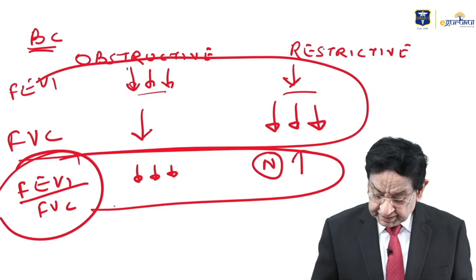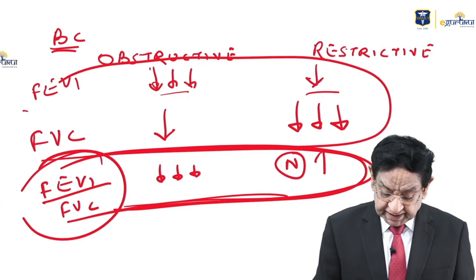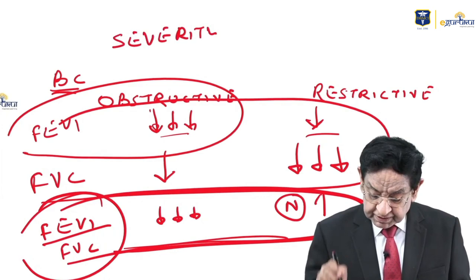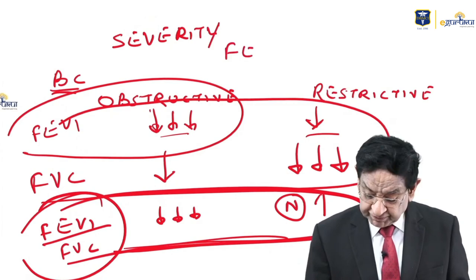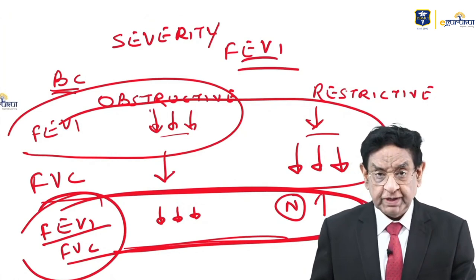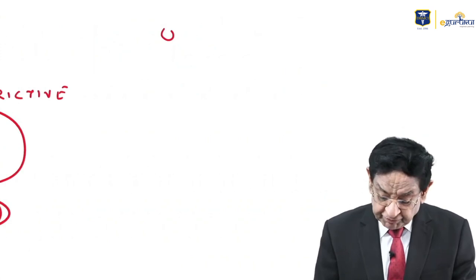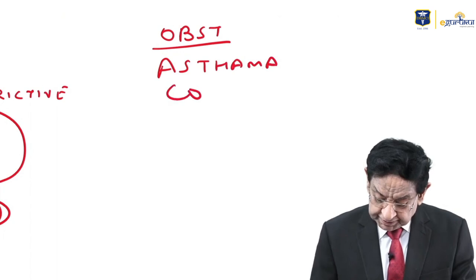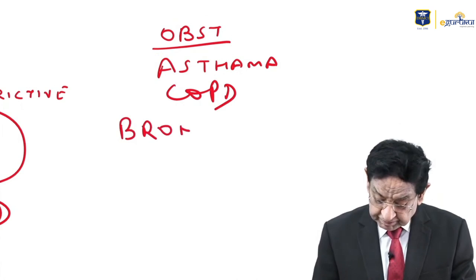This is a very important universal question. FEV1 is reduced in obstructive airway disease, and to know the severity of obstructive airway disease you check FEV1. Examples of obstructive airway disease include bronchial asthma, COPD, and bronchiectasis.